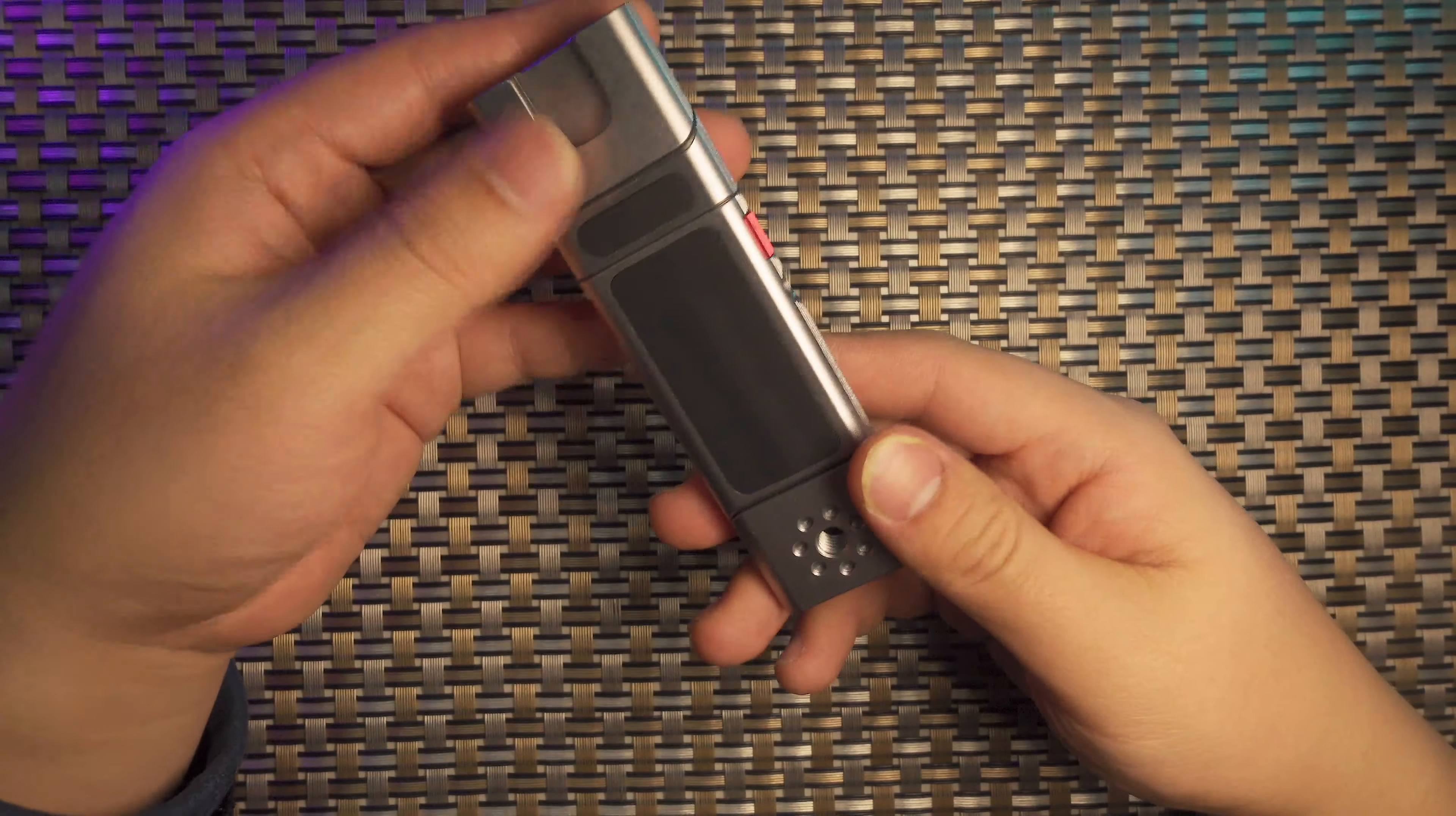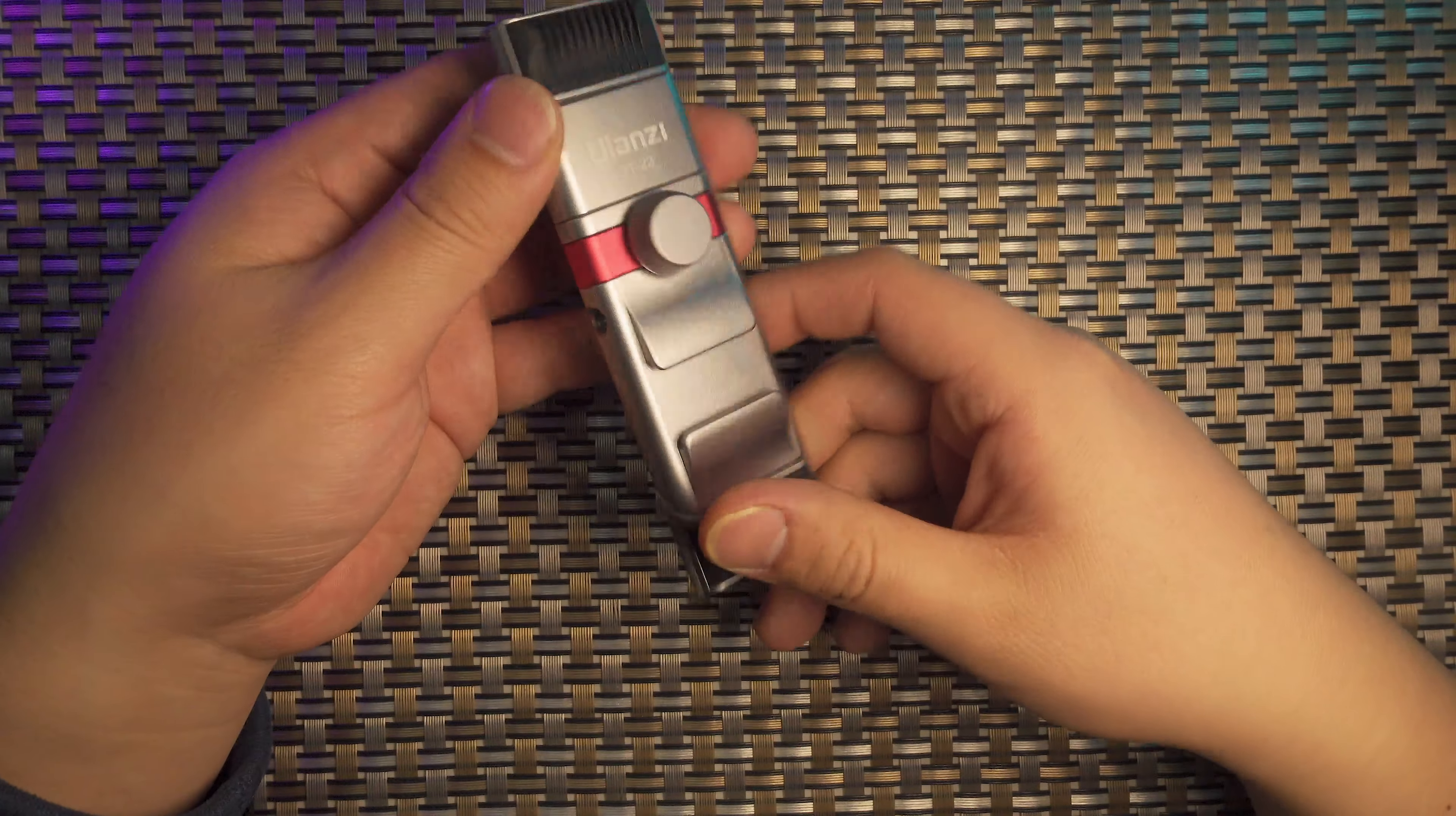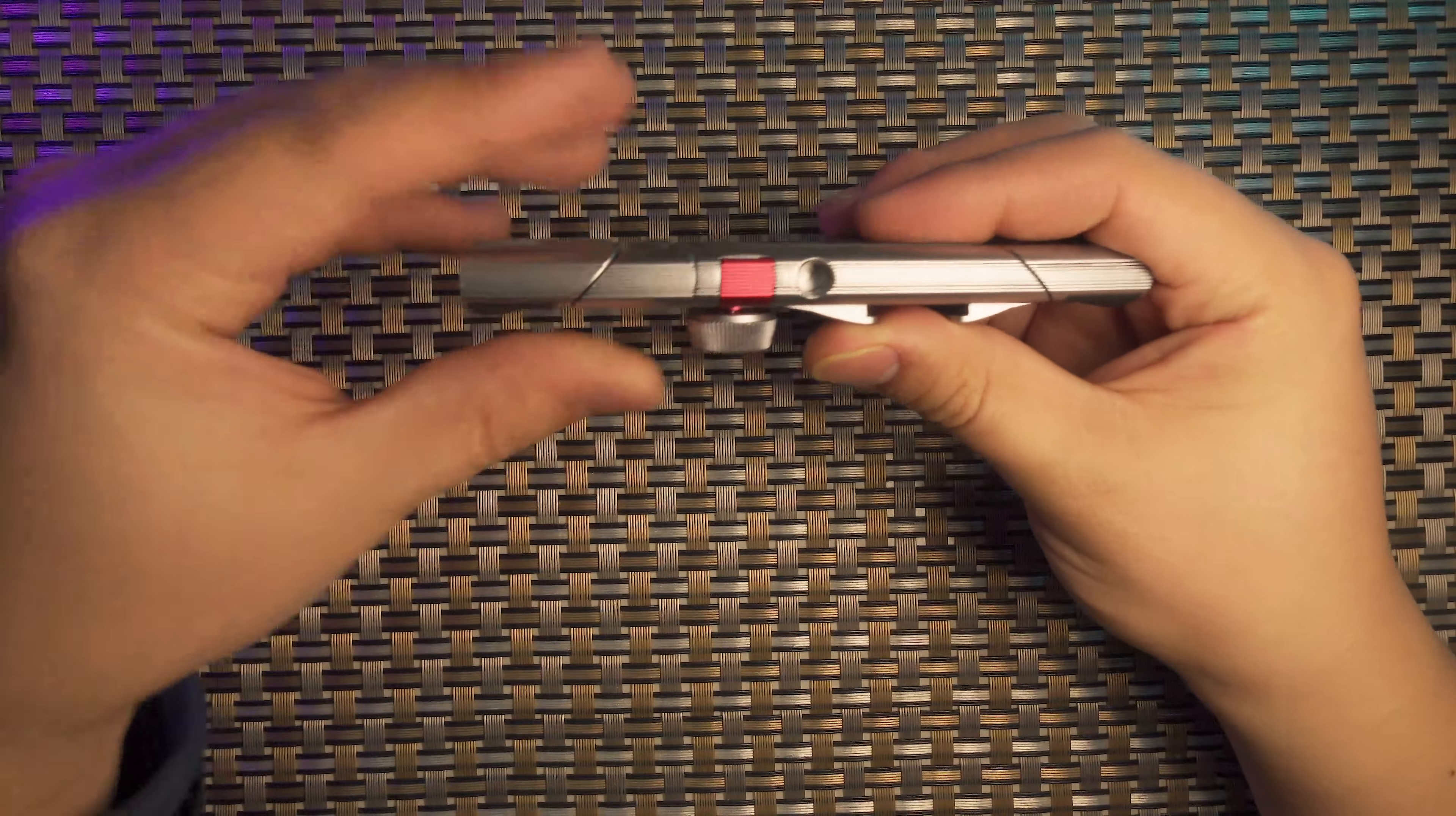In this video, let's talk about this very elegant design, the phone clamp designed by Ulanzi. This is the Ulanzi ST23. It's silver metal and feels really nice in your hand. It's made of aluminum and it's super thin, super simple, and super portable.